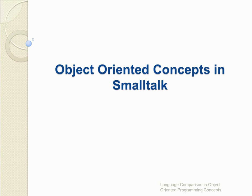For example, to implement a new control structure, or even so that the existing behavior will be changed. This is summarized in a commonly heard phrase: in Smalltalk, everything is an object, which would more accurately be expressed as all values are objects, as variables aren't.